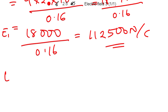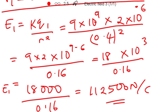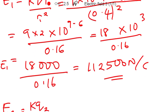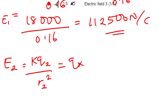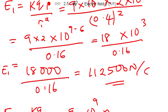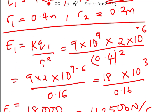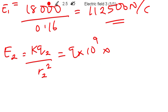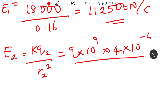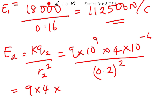We do the same thing for E2. E2 equals k times q2 over r2 squared. So we have nine times ten to the power of nine times q2. Q2 has a value of negative four microcoulombs, but we are going to neglect the negative sign and take only the magnitude, which is four times ten to the power of negative six, divided by r2 squared — r2 is 0.2, so we square it to get 0.04.